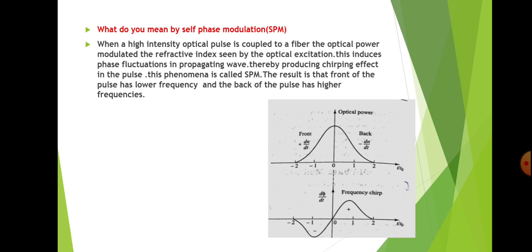What is self-phase modulation? When a high intensity optical pulse is coupled to a fiber, the optical power modulates the refractive index seen by the optical excitation, and this induces phase fluctuations in the propagating wave, thereby producing a chirping effect in the pulse. This phenomenon is called self-phase modulation.